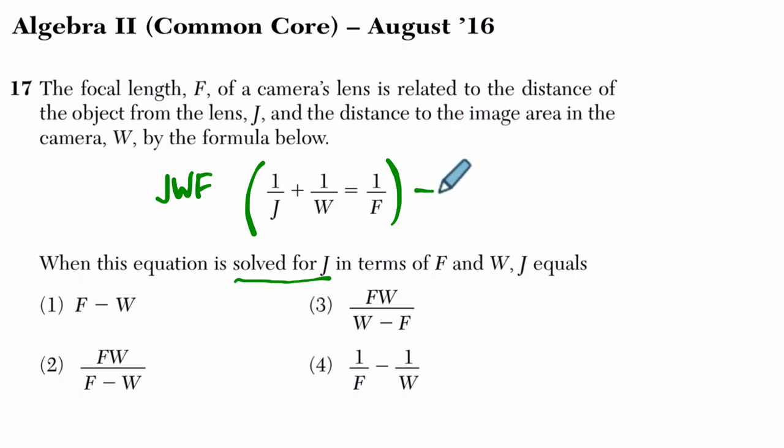What happens if I do that? Well, if I multiply everything by j, w, and f, that's true if and only if—I'm going to rewrite this. j, w, f times 1 over j. The j's cancel out. I just have w, f left over.